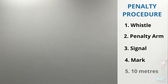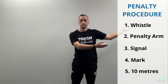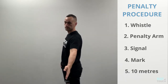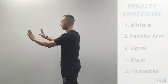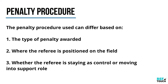Let's have another quick glance. Notice how the penalty arm is always pointing towards the non-offending team. From there we flow into the signal before giving the mark and then 10 metres. It's important to note that the penalty procedure can differ based on the type of penalty, where the referee is positioned on the field, and whether they're staying as the control referee or moving into the support role.